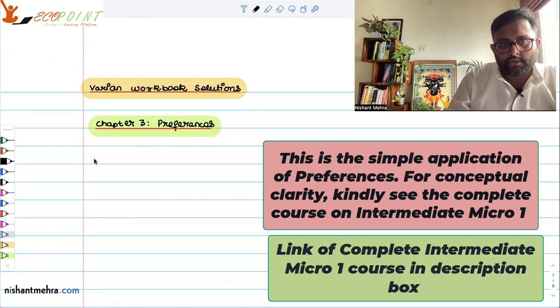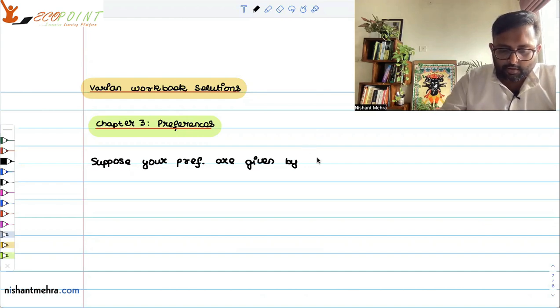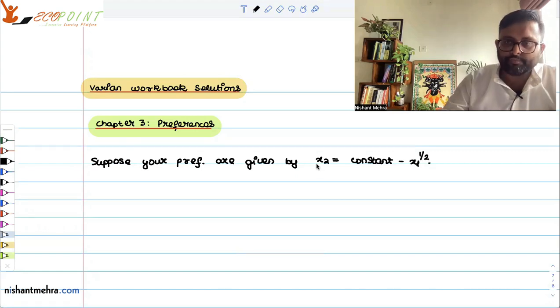So let's look at this question. Suppose your preferences are given by x2 equals constant minus root of x1.